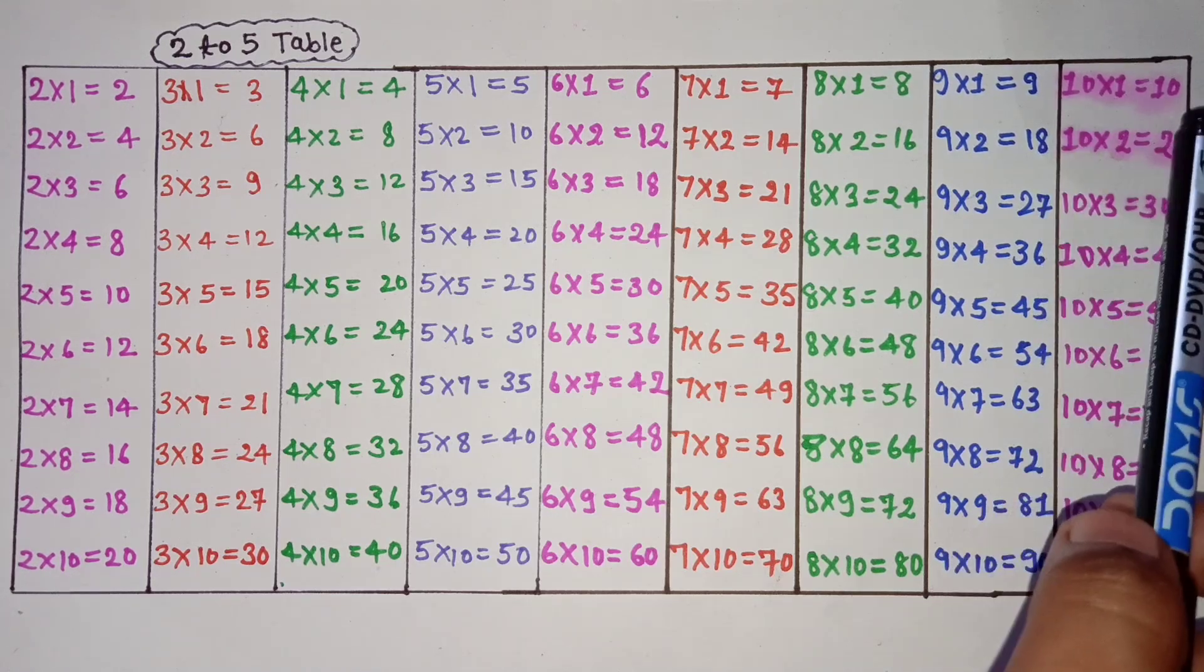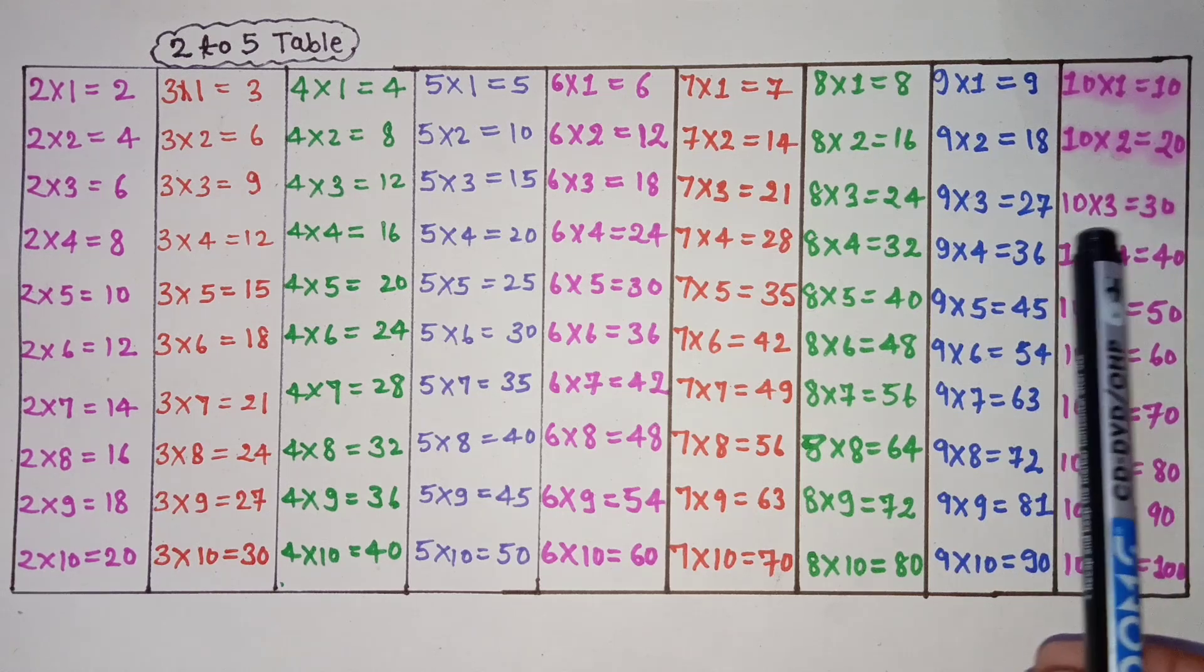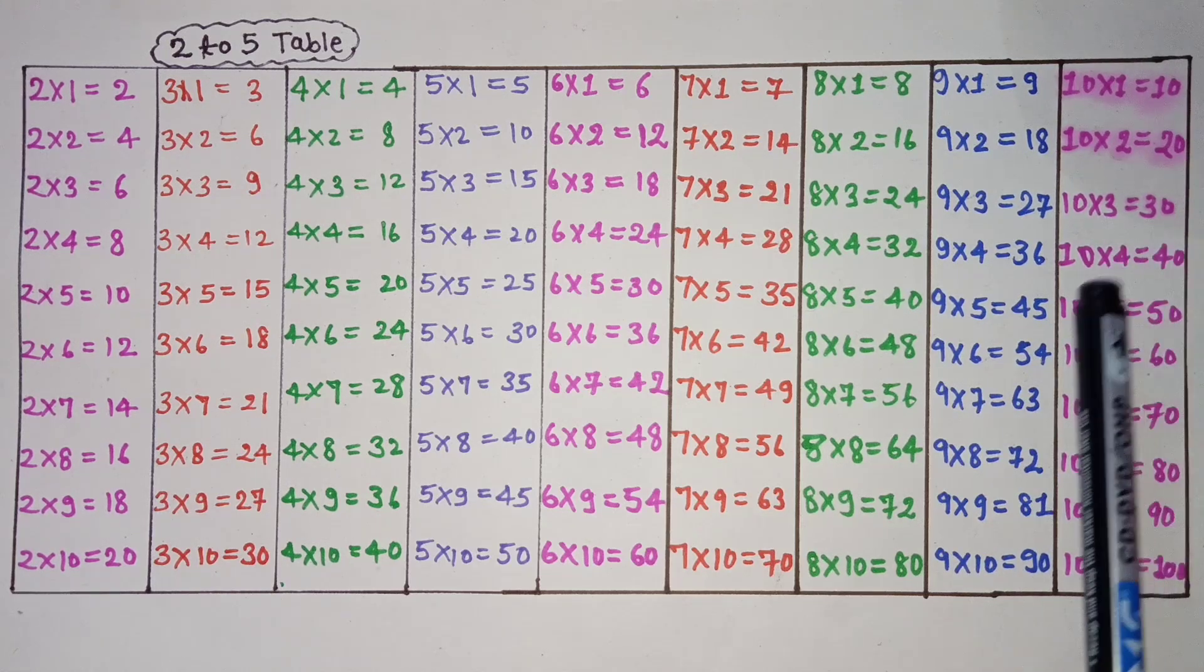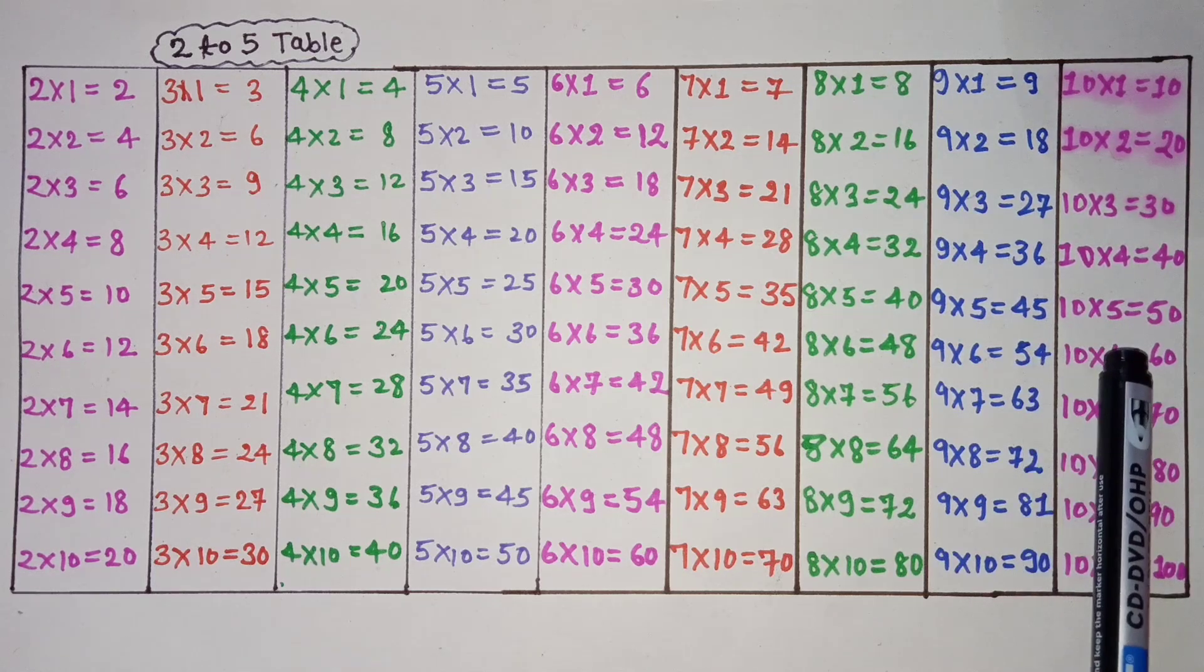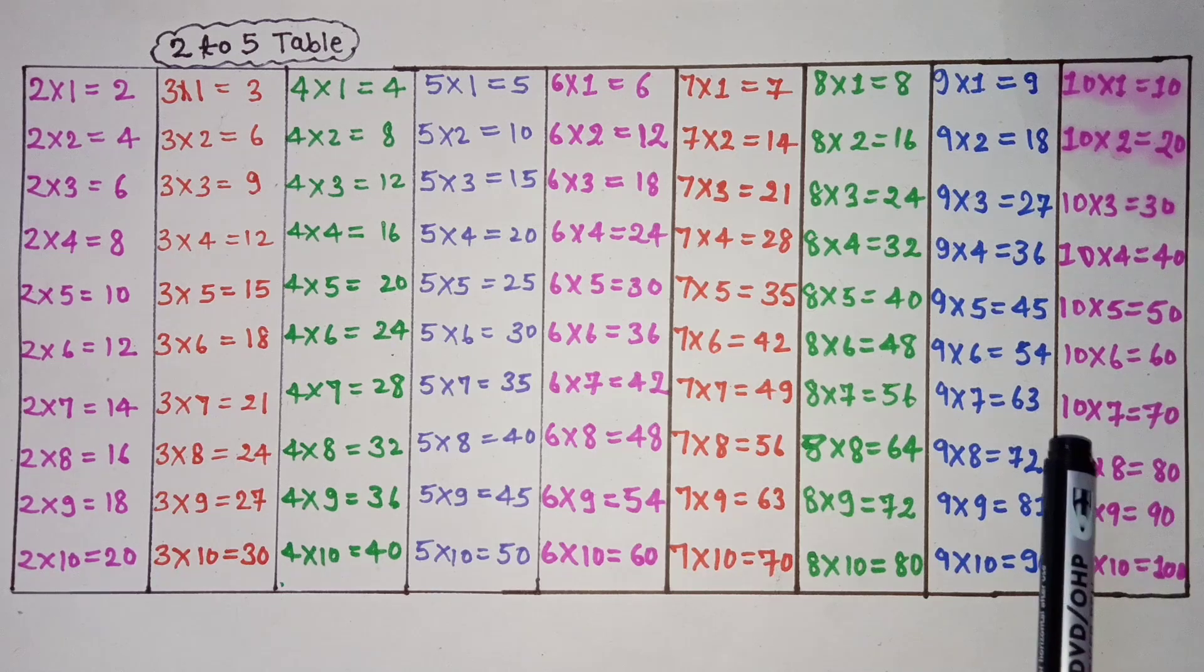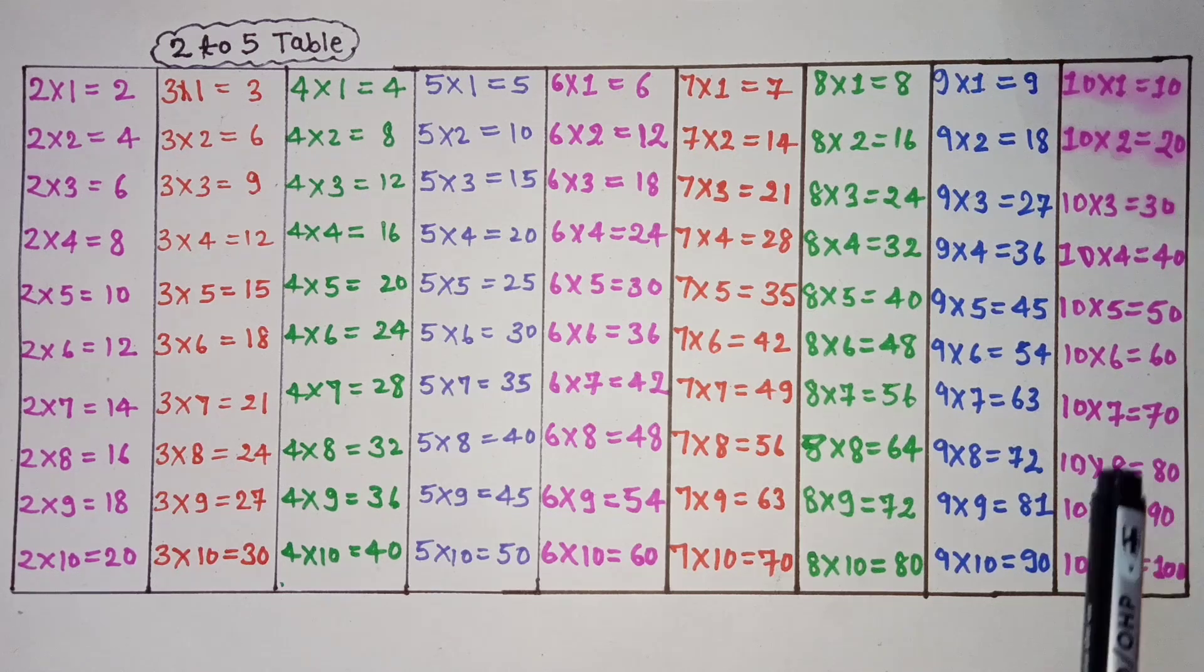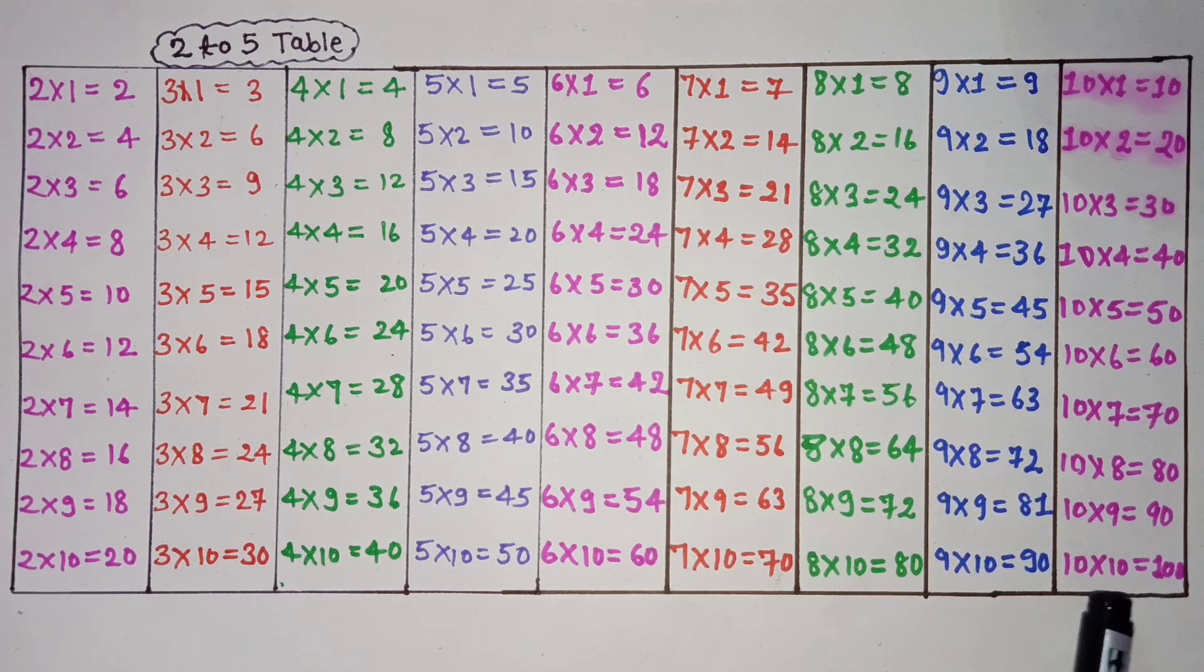10 times 1 is 10, 10 times 2 is 20, 10 times 3 is 30, 10 times 4 is 40, 10 times 5 is 50, 10 times 6 is 60, 10 times 7 is 70, 10 times 8 is 80, 10 times 9 is 90, 10 times 10 is 100.